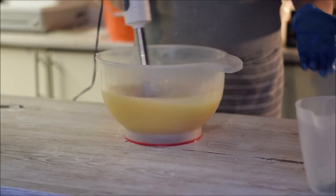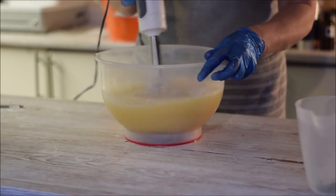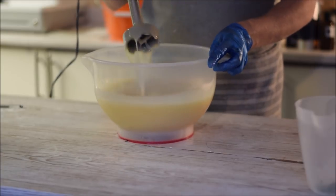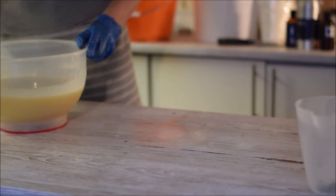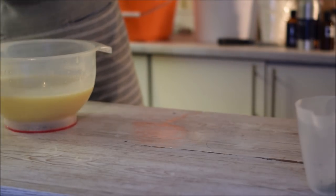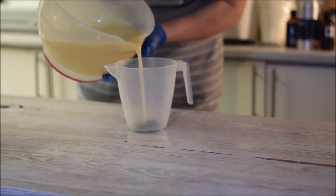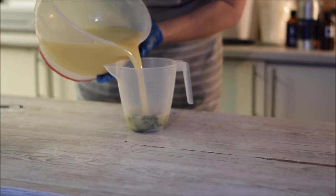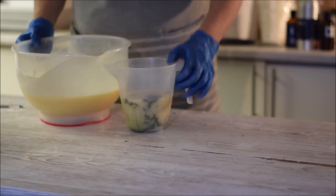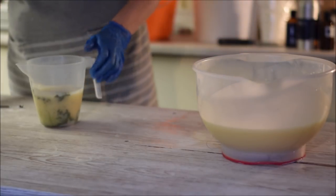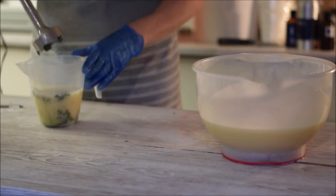Okay, that's emulsified but not up to trace just yet, so I'm just going to pour off my green portion, about half a jug. I've got a teaspoon of mica in there, and I'm using a pistachio green, I think it is. I'm just gonna stick blend it. Let's live life on the edge.